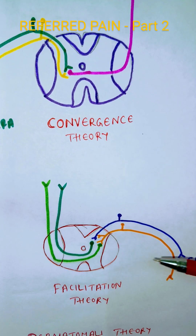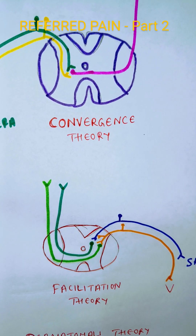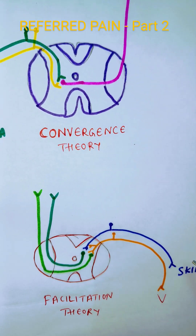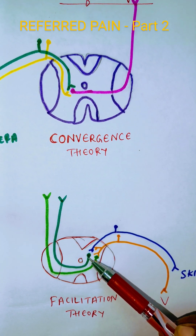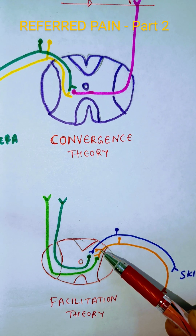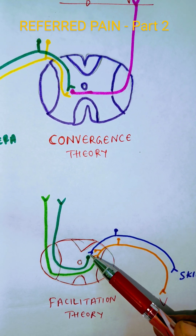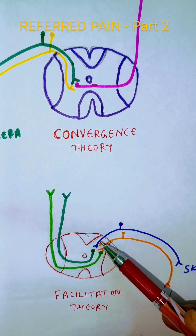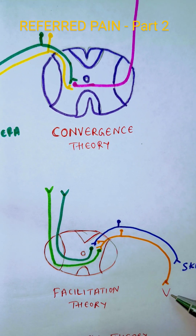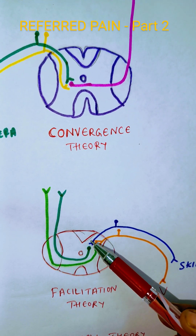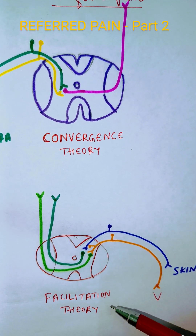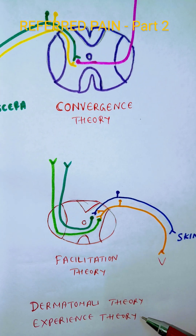Another theory is the facilitation theory. According to this theory, there are separate second order neurons — the neuron carrying impulses from the viscera (orange) ends on a separate second order neuron, and information from the skin ends on another neuron. However, the first order neuron from the viscera gives a collateral to the neuron coming from the skin. So the skin pathway's second order neuron is facilitated by impulses from the viscera, and pain is initially felt in the skin area. This is called the facilitation theory.